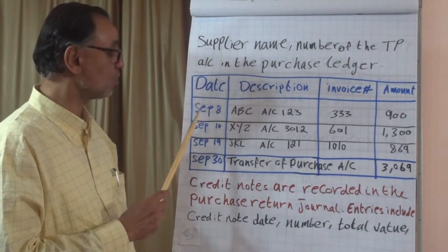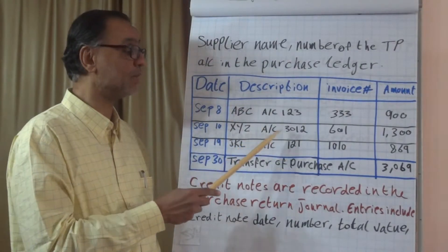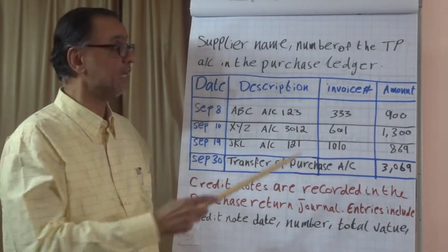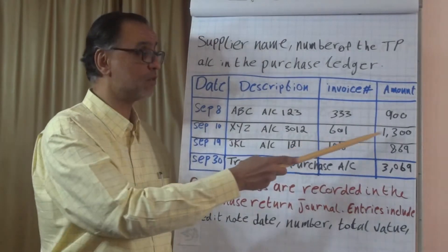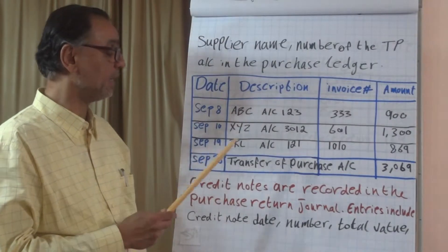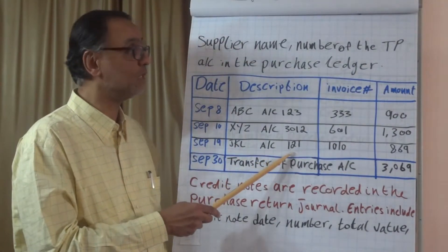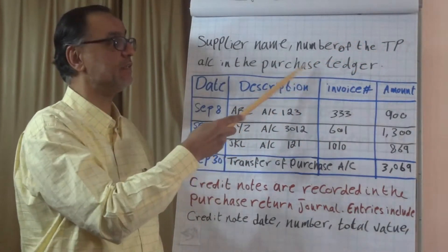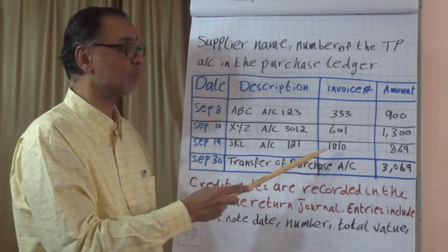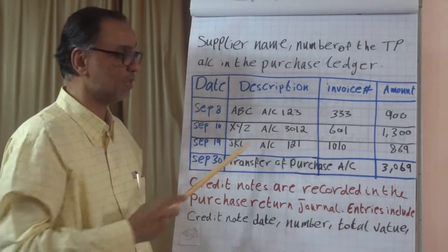The second transaction was on September 10th from XYZ company, whose account number is 3012 — that's the trade payable account in the purchase ledger — and the purchase amount was $1,300. The third transaction happened on September 19th from JKL company, whose account is 121, and the purchase amount was $869 with invoice number 1010. These serial numbers are from the suppliers and differ from one supplier to another.